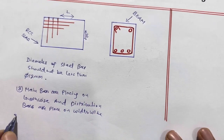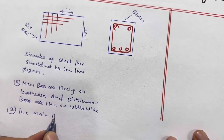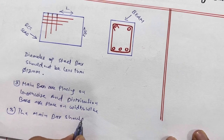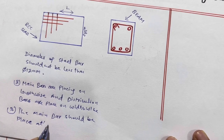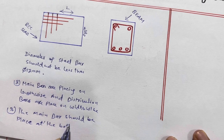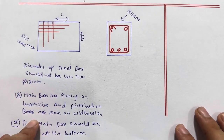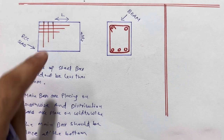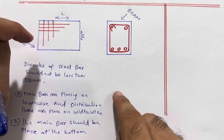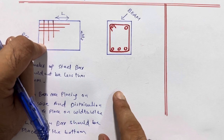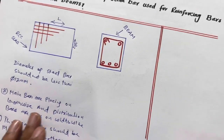Remember, the main bars should be placed at the bottom, and distribution bars should be placed on top of the main bars. When the load comes on top of the RCC slab, the distribution bars transfer the load to the main bars, and the main bars distribute the load to the beam, beam to column, and column to footing. This is the load transfer mechanism in an RCC slab.